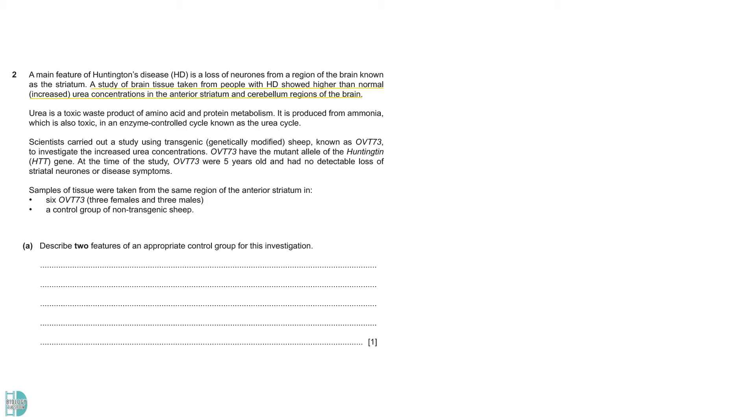Question 2 is about Huntington's disease. A study shows that people with the disease have a higher urea concentration in a specific region of their brains. A study was carried out to investigate the increased urea concentration in a group of sheep with a gene called OVT73. This is a mutant allele of the Huntington gene. Part A: Describe two features of an appropriate control group for this investigation. To make valid comparisons between the control group and the test group, some important control variables must keep constant. These include the same number of each sex with the test group. Same age, which is 5 years old. Same breed, or type of the sheep. Same or at least similar mass or size as the test group. And most importantly, they do not have the mutant allele that can cause Huntington's disease.